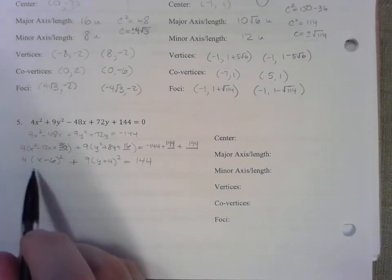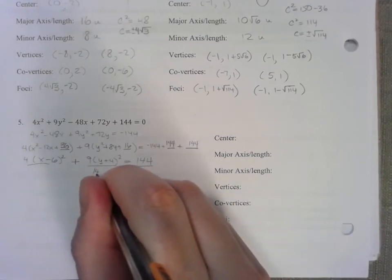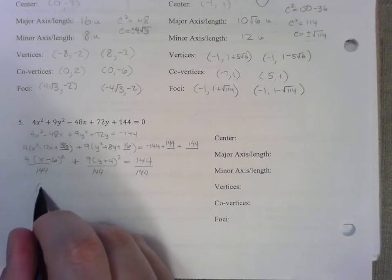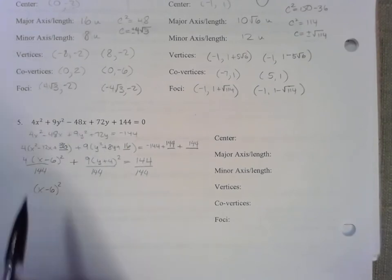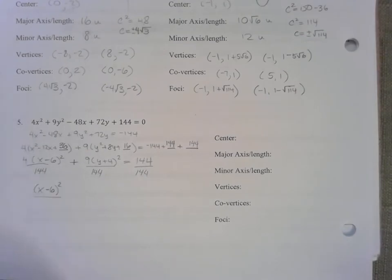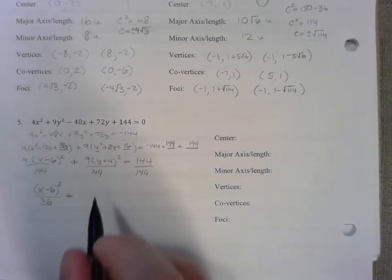What we're going to do is we're going to divide every term by 144 and rewrite our expression. On the left I have the quantity x minus six squared. If I divide four by 144 I get a fraction. That's sort of like what's supposed to happen and I believe it's four times 36 that gives us 144.